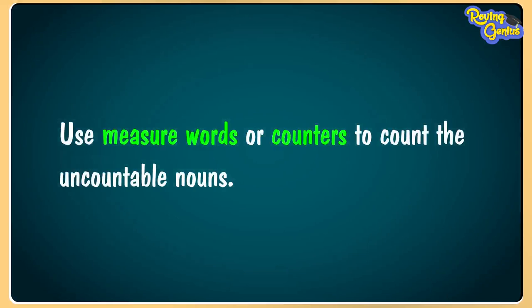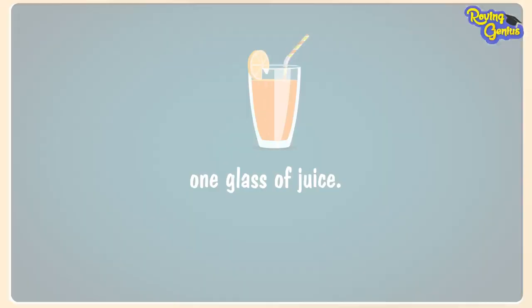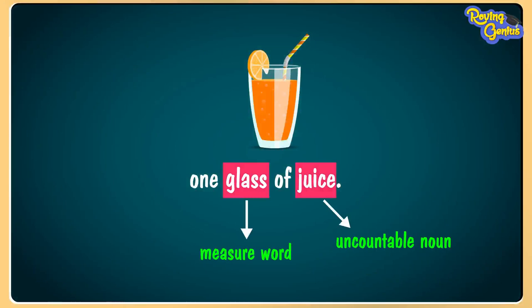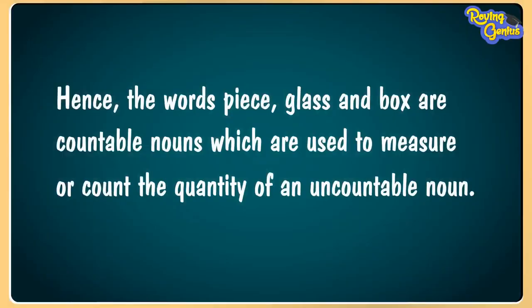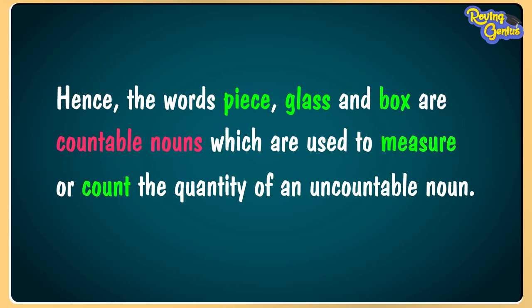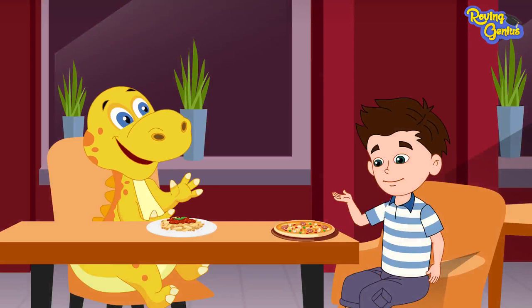Second, use measure words or counters to count uncountable nouns. For example: two pieces of cake, one glass of juice, one box of crayons. Hence, the words piece, glass, and box are countable nouns which are used to measure or count the quantity of an uncountable noun.